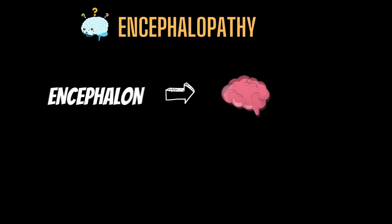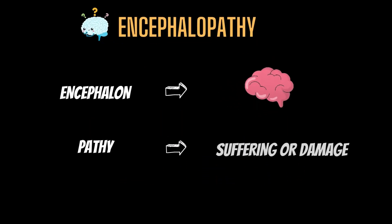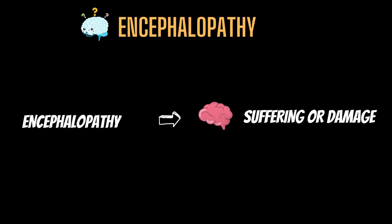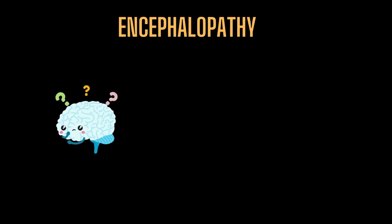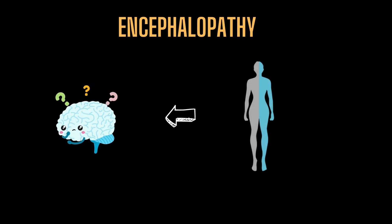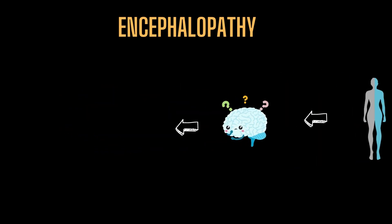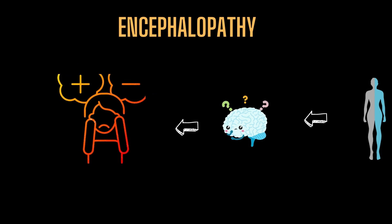Encephalon means brain, and pathy refers to suffering or disease. In medicine, the term encephalopathy refers to brain damage or disease. It occurs when a change in the way your brain functions or a change in your body has an impact on your brain. These alterations result in a shift in your mental state, leaving you perplexed and responding differently than usual.